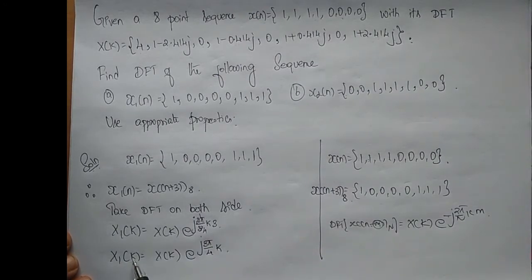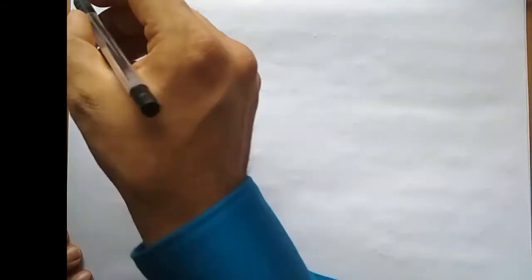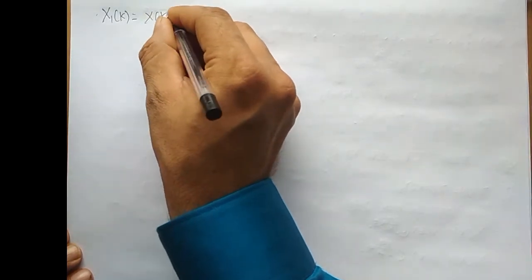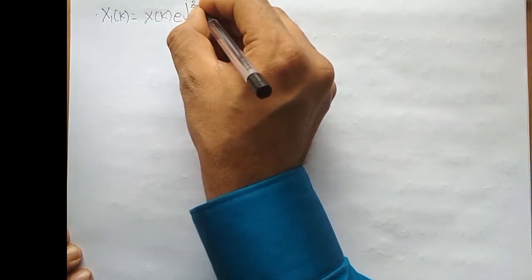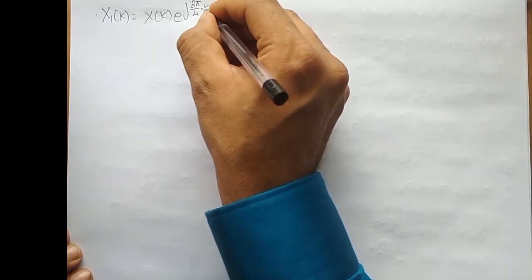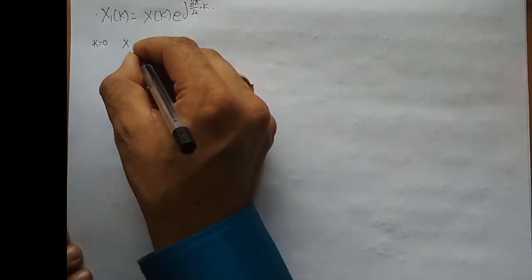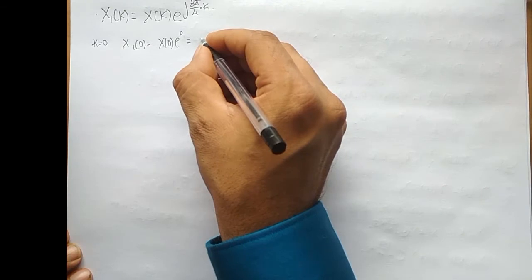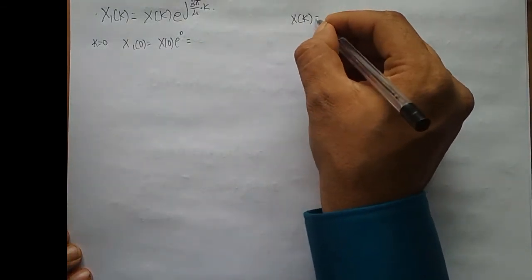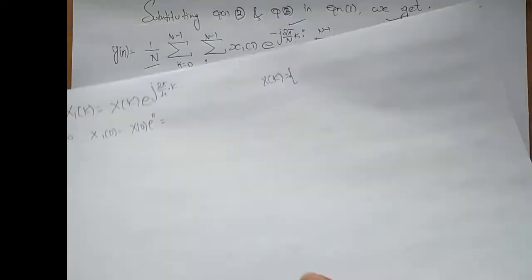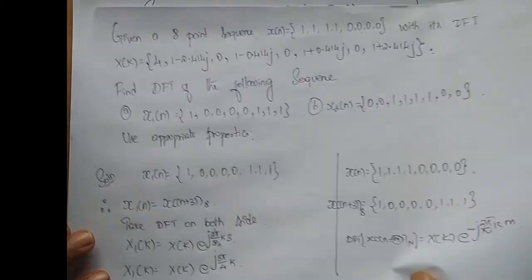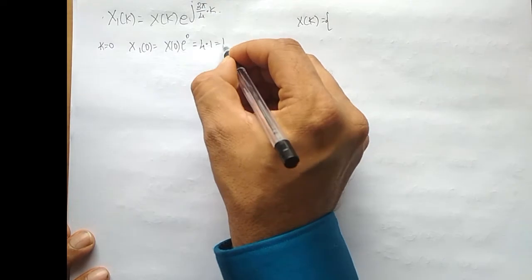Now I need to give values for k varying from 0 to 7. So X1[k] = X[k] · e^(j3πk/4). For k = 0: X1[0] = X[0] · e^0 = 4 · 1 = 4. What is X[0]? X[0] is 4.